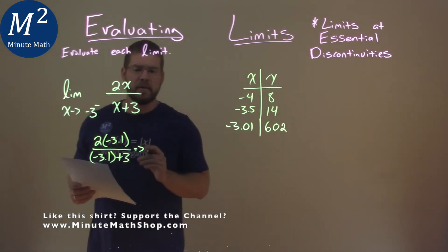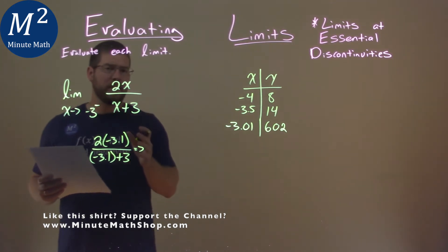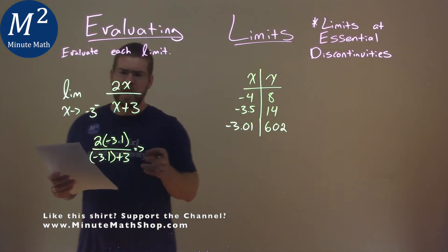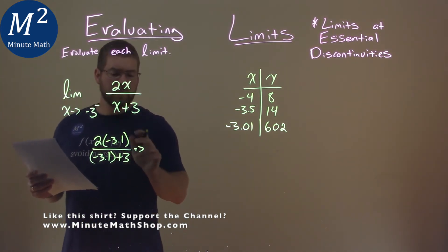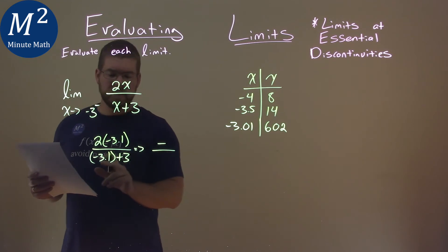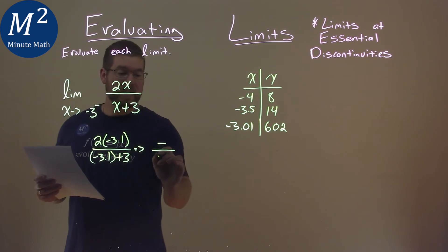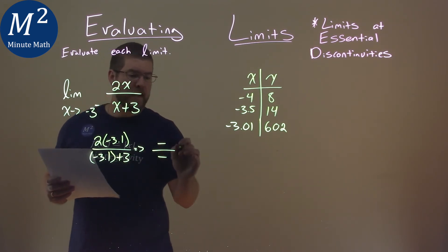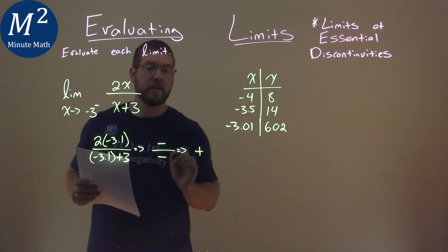All I'm caring about here is: we know it's going to go to infinity, but is it positive or negative? What I'm caring about is the final result, positive or negative? Well, the numerator 2 times negative 3.1 is negative. Negative 3.1 plus 3 comes out to still be a negative value. And negative divided by a negative is a positive.